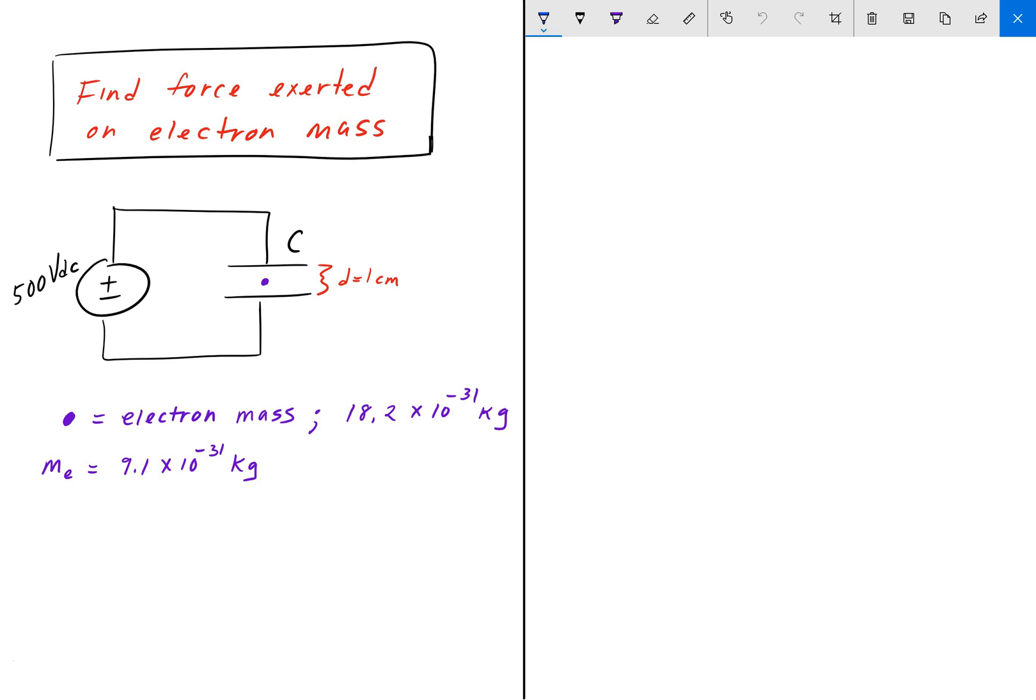Here we have a parallel plate capacitor with a spacing between the parallel plates of one centimeter. Suppose that we have an electron mass whose mass is 18.2 times 10 to the negative 31 kilograms.